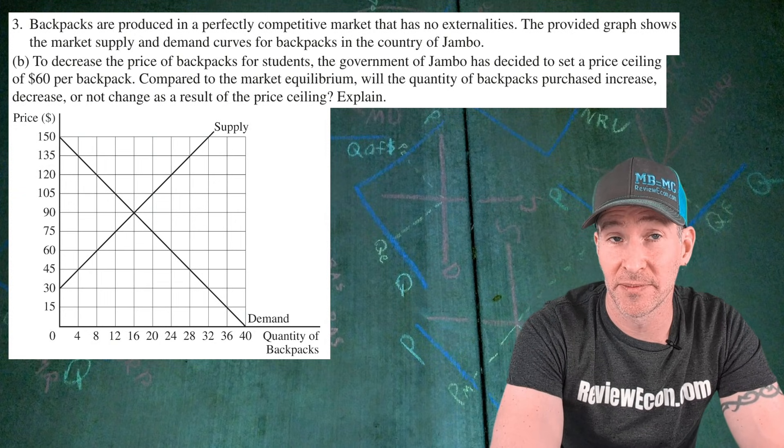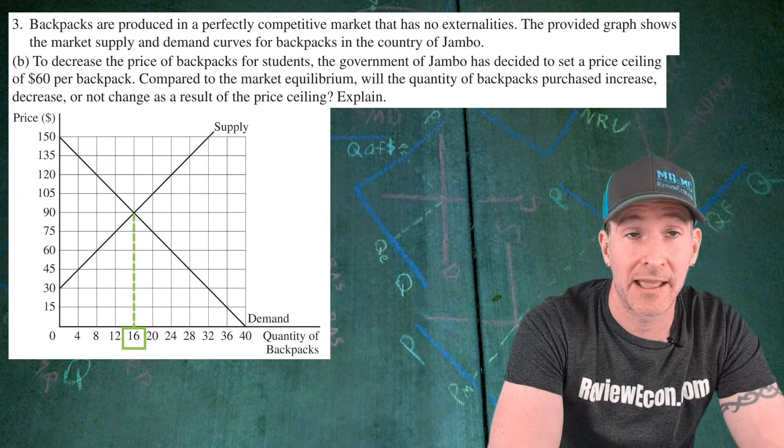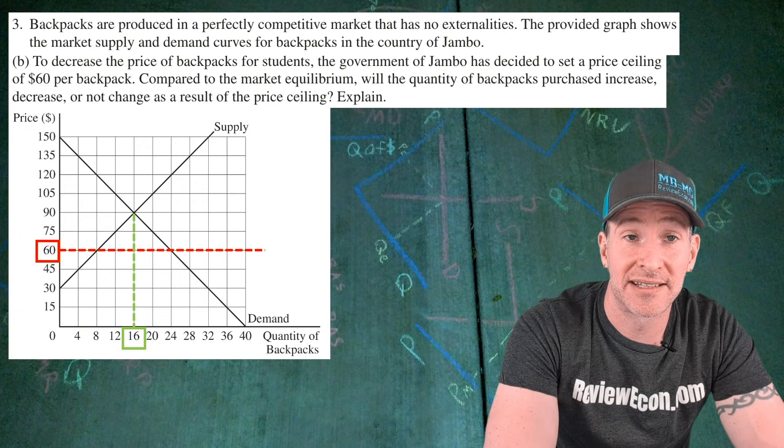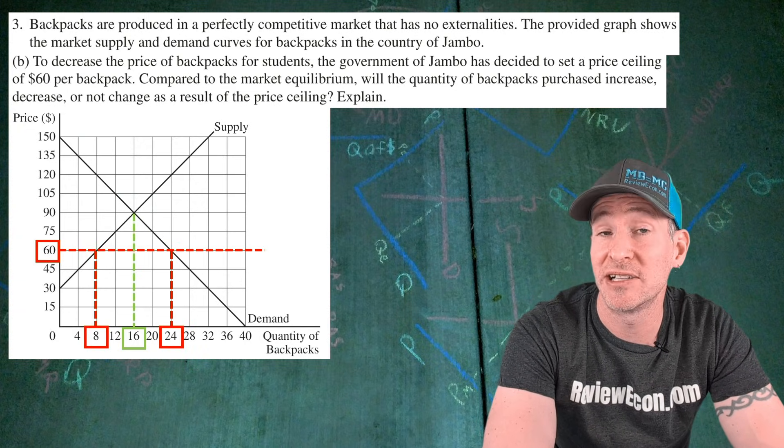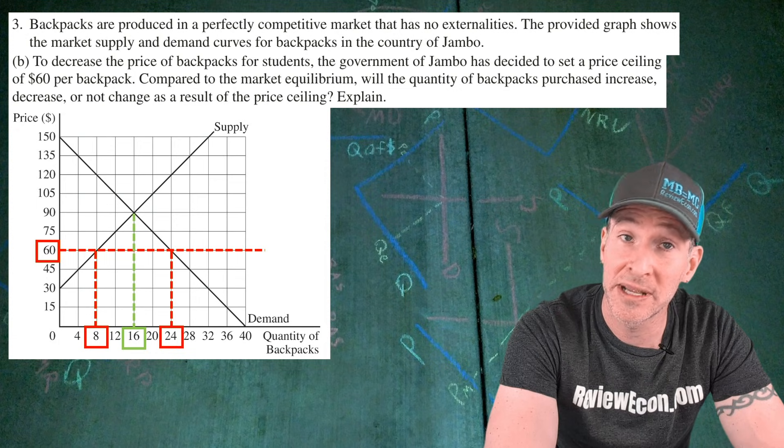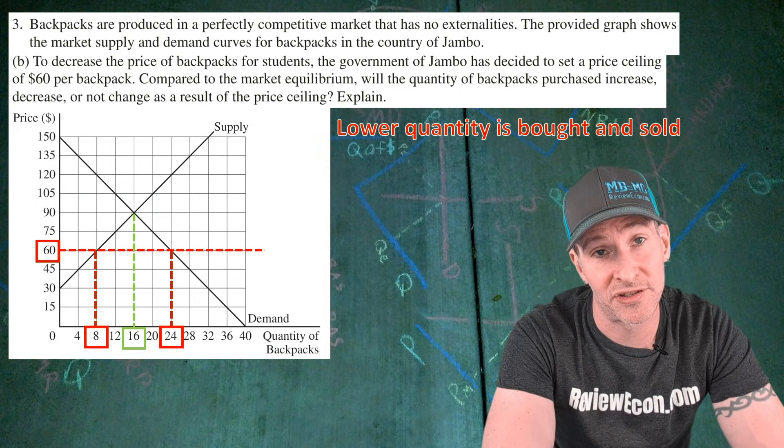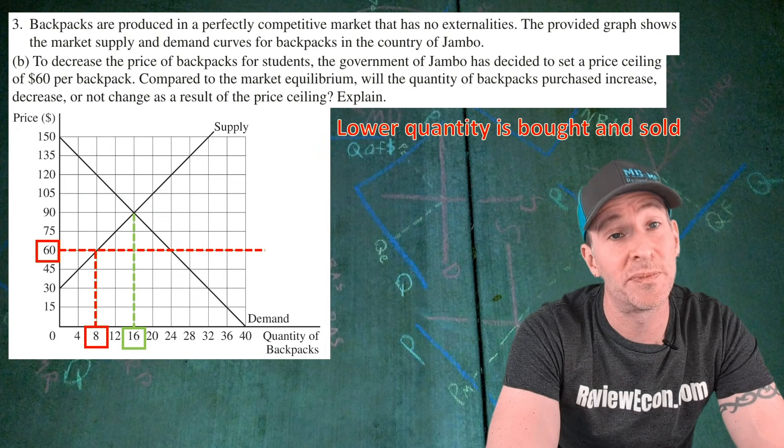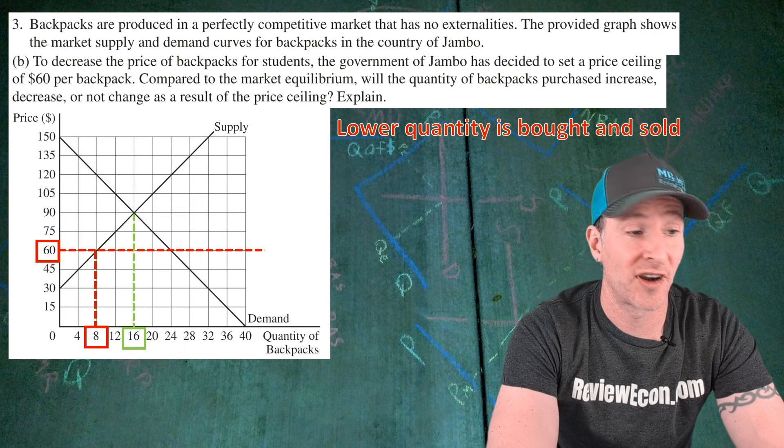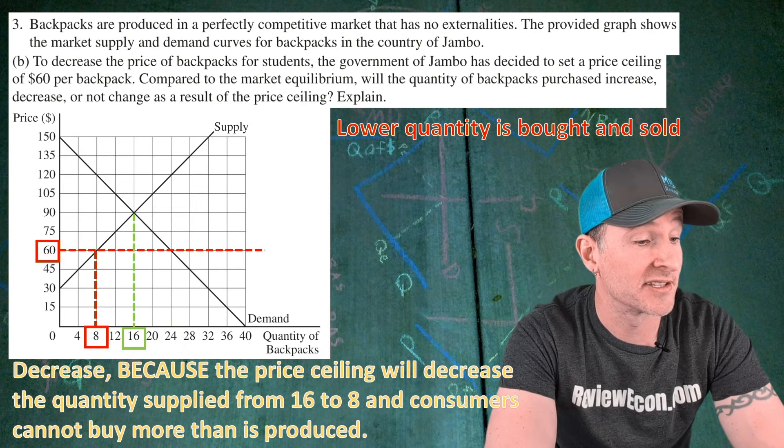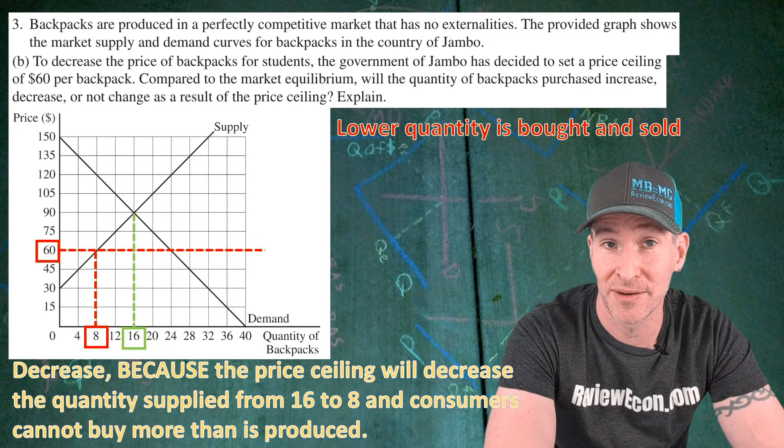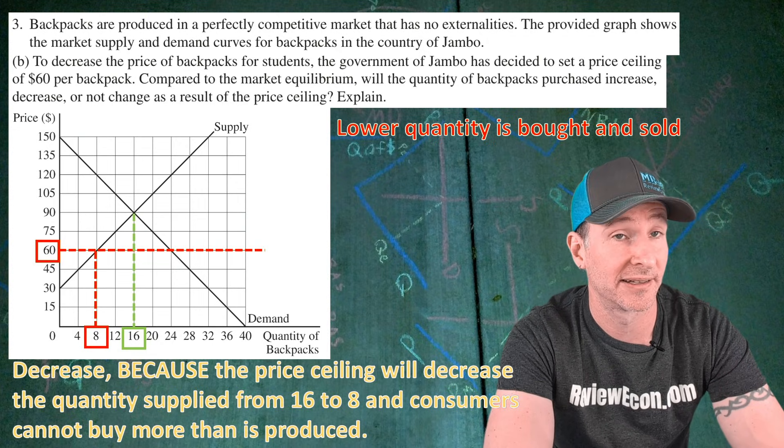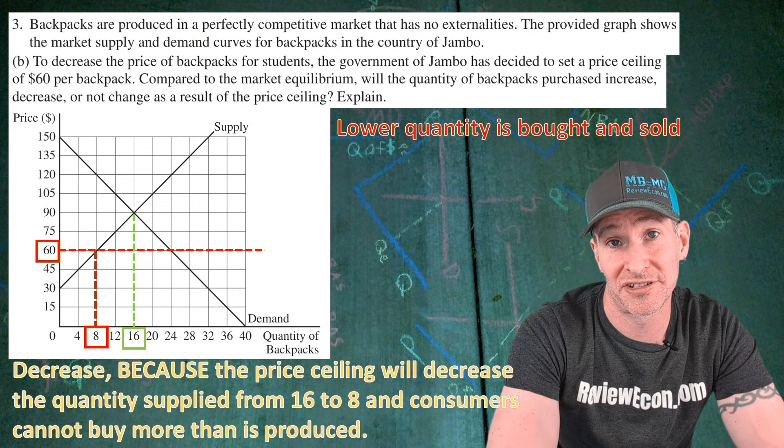Remember, our market equilibrium quantity is 16 backpacks. If we put in that price ceiling at $60, we can see that the quantity supplied will be 8 backpacks and the quantity demanded will be 24 backpacks. But it will be the lower quantity that is bought and sold. So the quantity exchange will be 8 units. That leads us to our answer: decrease. Because the price ceiling will decrease the quantity supplied from 16 to 8 and consumers cannot buy more than producers are willing to make. And if you have an answer something like that, you get your second point.